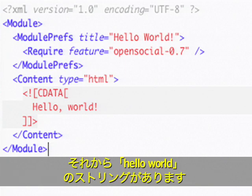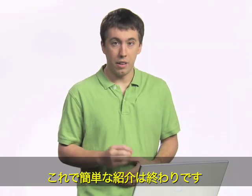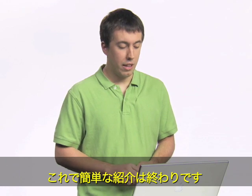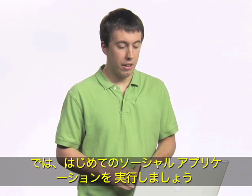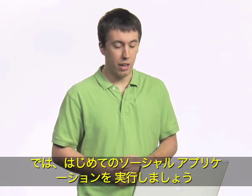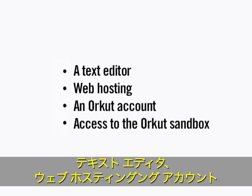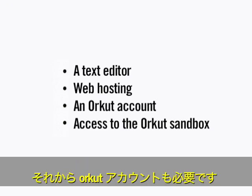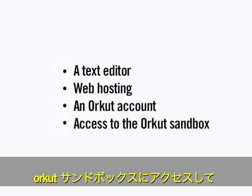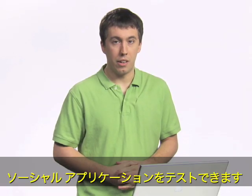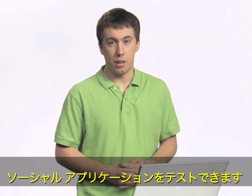And the string "hello world." So now that the intro is out of the way, we can go down and run our first social application. There are a couple of things that you'll need for this: first, a text editor and a web hosting account. In addition to that, you'll need an Orchid account and access to the Orchid sandbox, which is where we allow you to test your social applications.